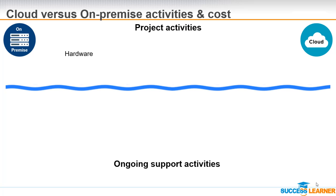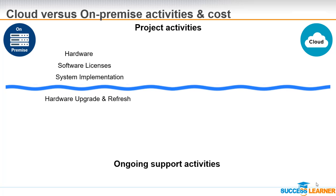For on-premise, the visible initial costs include hardware, software licenses, and system implementation — which covers configuration, customization, testing, data conversion, and training. Less obvious are the ongoing hidden costs: hardware upgrade and refresh, software license maintenance, and potentially additional licenses, all of which are continuous activities and costs.